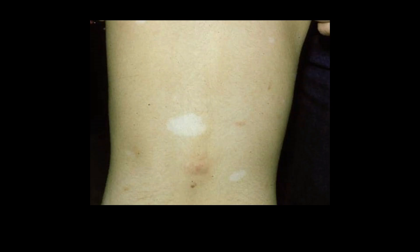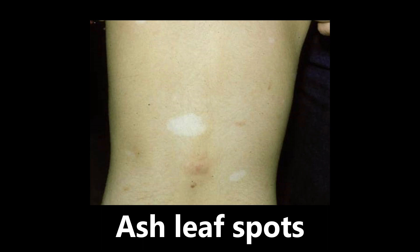Back to dermatology — we see abnormalities that are examples of ash leaf spots. These are hypopigmented macules that are seen in tuberous sclerosis. So if you see these discolored, lighter areas — hypopigmented macules — think ash leaf spots, which are associated with tuberous sclerosis.